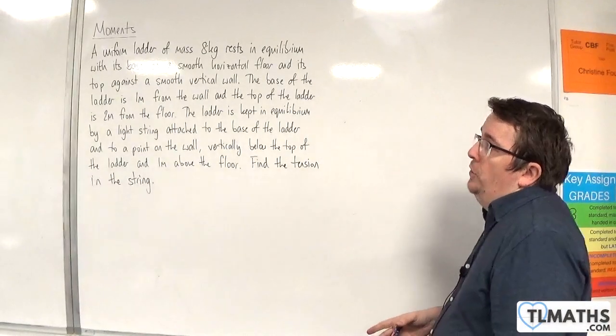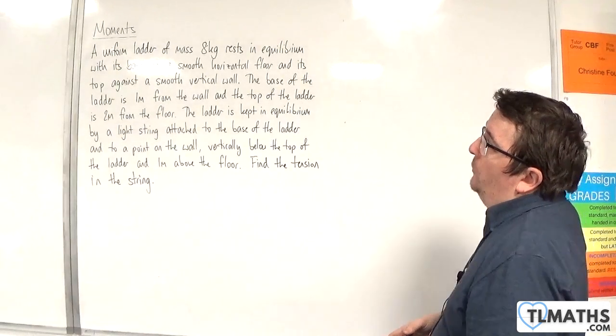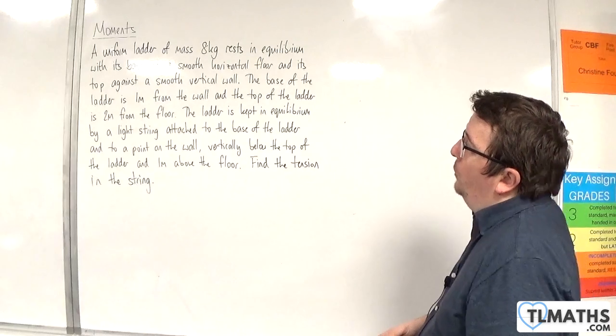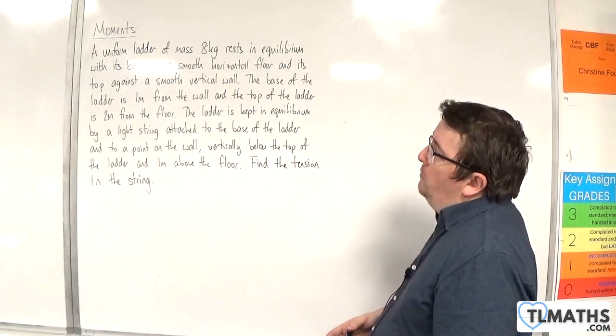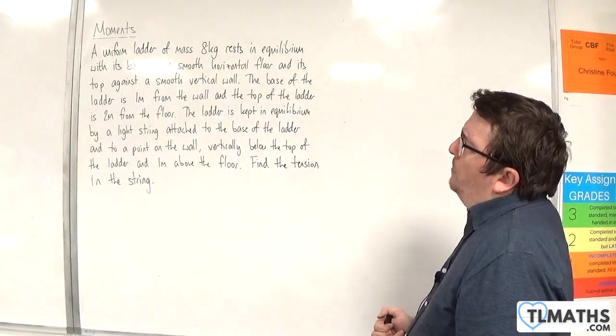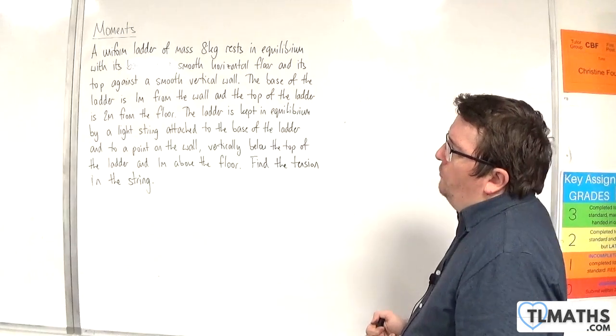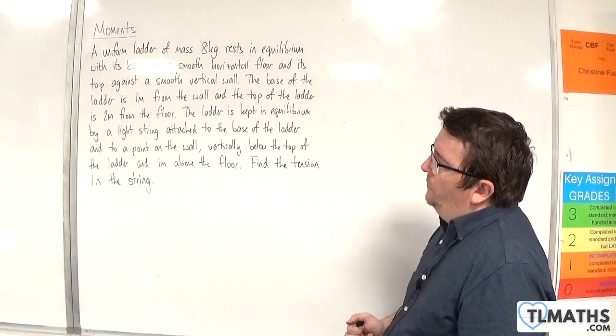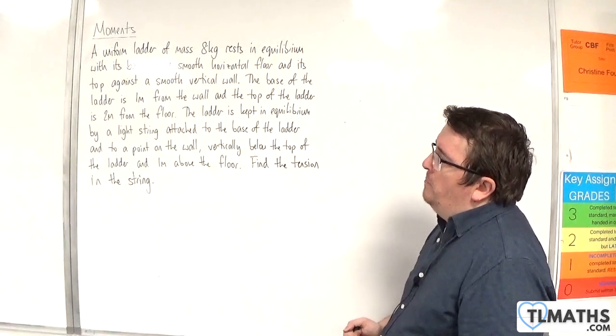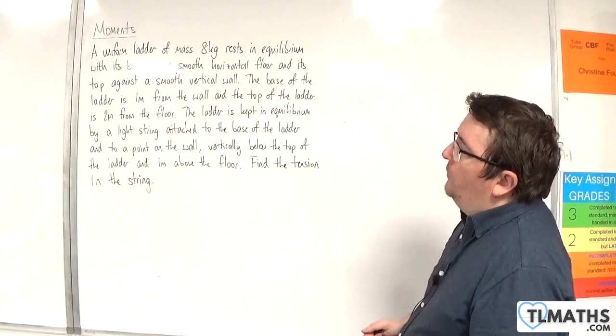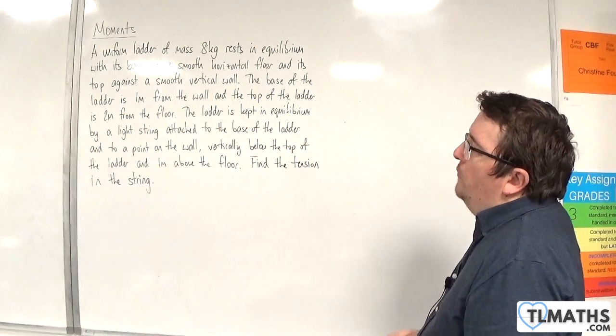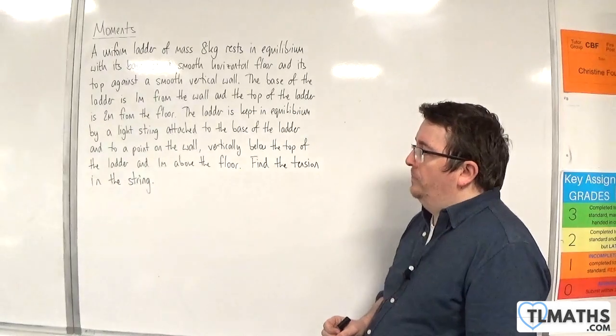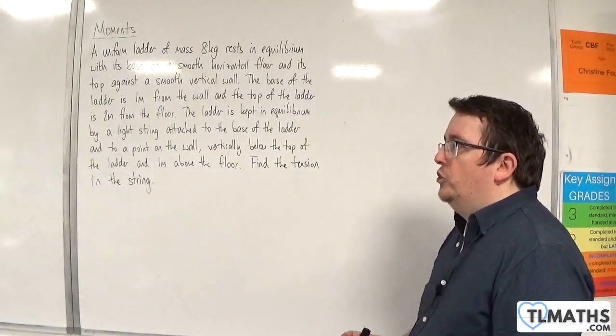In this video we have a uniform ladder of mass 8 kilos rests in equilibrium with its base on a smooth horizontal floor and its top against a smooth vertical wall. The base of the ladder is 1 metre from the wall and the top of the ladder is 2 metres from the floor. The ladder is kept in equilibrium by a light string attached to the base of the ladder and to a point on the wall, vertically below the top of the ladder and 1 metre above the floor. Find the tension in the string.